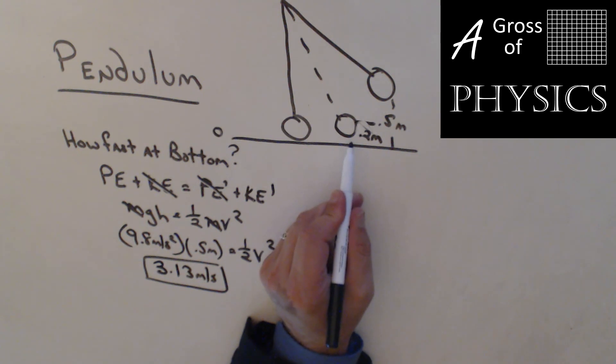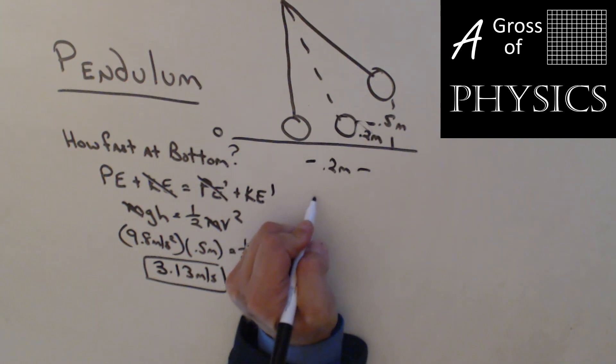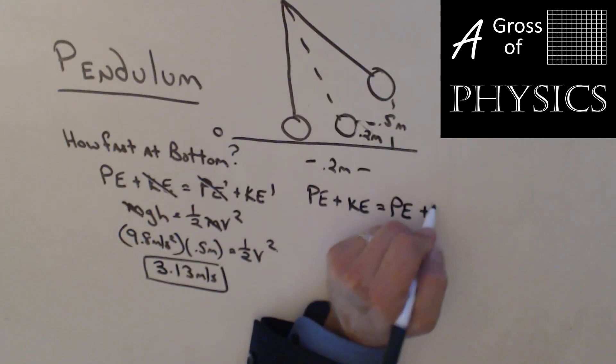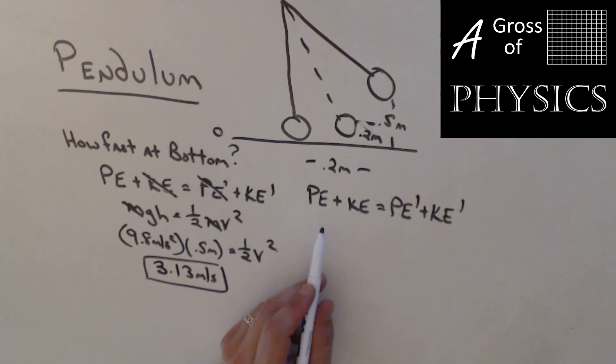Now the second part of the problem asks about a height of 0.2 meters. So 0.2 meters is our second problem here. How fast is it going? Now if we look at PE-KE, at the top it has potential and no kinetic. So the kinetic is still zero, so I'm going to start at the top point. But at the second spot, we have both potential and kinetic. So the equation looks like this: mgh equals mgh plus one-half mv squared.